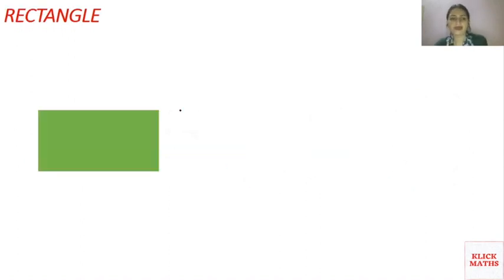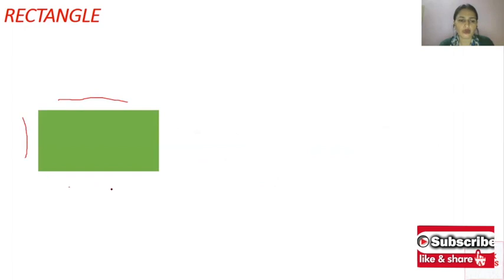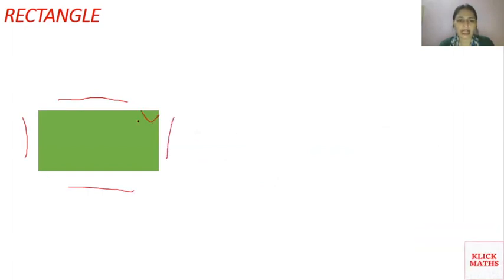The third shape is a rectangle. A rectangle is a closed figure with four line segments — one, two, three, four — and it has four angles: one, two, three, four. The opposite sides of a rectangle are equal: this side equals this side, and this side equals this side.